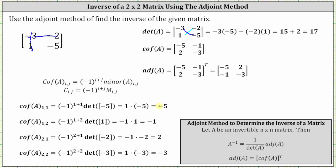Cofactor A sub 1,2 is equal to negative 1 raised to the power of 1 plus 2 times the corresponding minor. To find the minor, we eliminate row 1 and column 2, which leaves us with the 1 by 1 matrix with an entry of 1. The minor is the determinant of that 1 by 1 matrix.